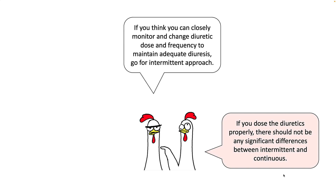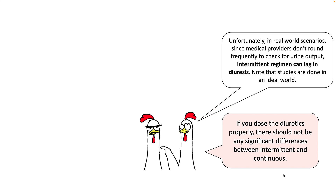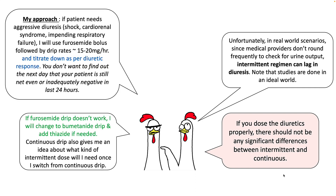If you think you can closely monitor your patient and change diuretic dose and frequency depending on natriuresis, go for the intermittent approach. However, in the real-world scenario, since medical providers are usually very busy and don't round frequently to check urine output, intermittent treatment can lag in diuresis. My approach is that if the patient needs aggressive diuresis — for example, cardiogenic shock, cardiorenal syndrome, impending respiratory failure — I'll use a furosemide drip along with a bolus.